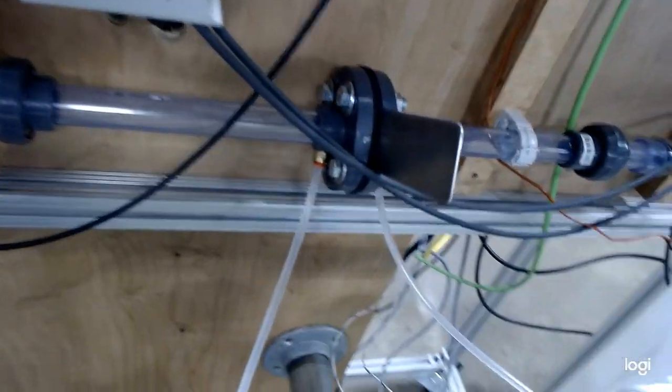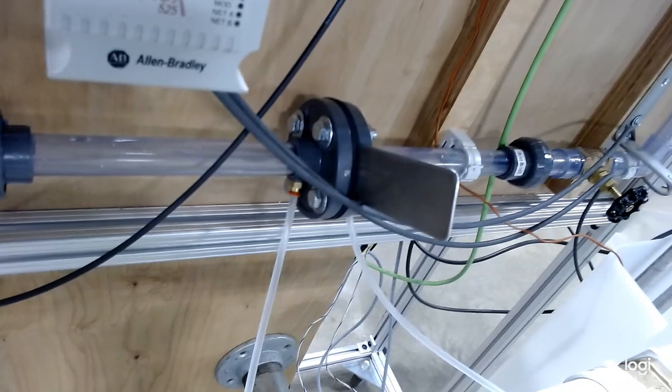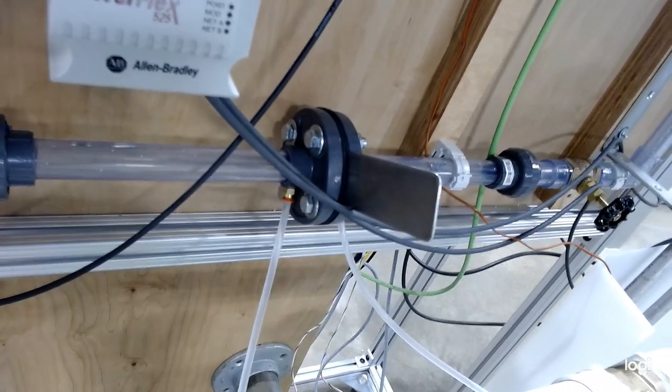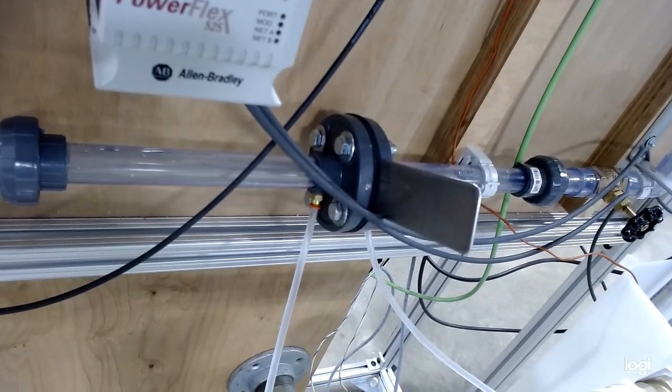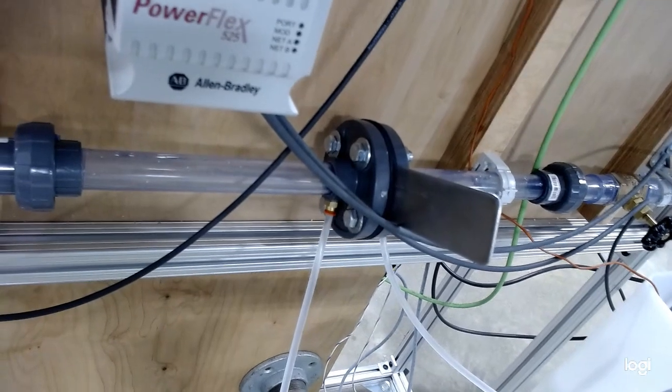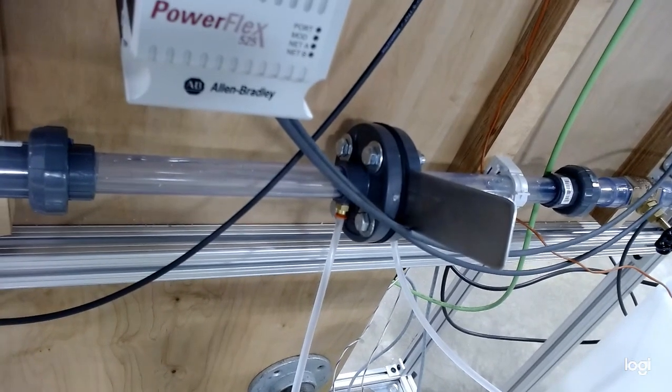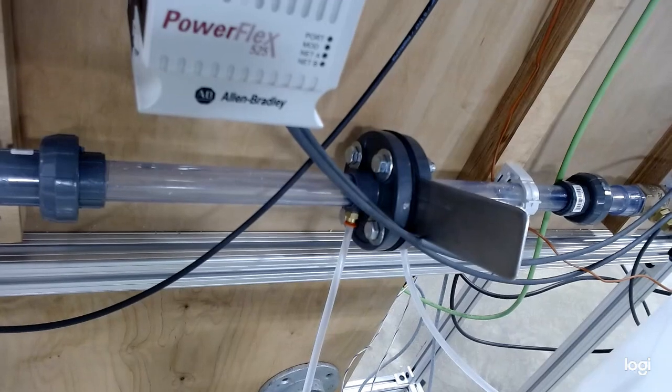So this is the orifice plate, the homemade one that we just made today. On this side of that orifice plate is a pressure connection up into the process line. We're actually right up into the water going through here.